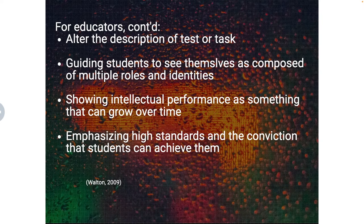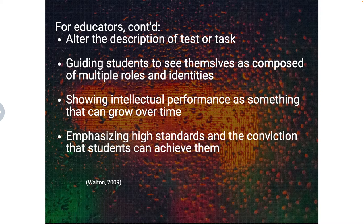Another thing you can do is alter the description of a test or task — for example, if you are giving a test to a group of elderly individuals, you might start by saying that it's not a test of cognitive ability or memory. Guiding students to see themselves as composed of multiple roles and identities can also help, as can showing intellectual performance as something that can grow over time. Finally, emphasizing that you have high standards and you believe that students can achieve them has been shown to greatly reduce the effects of stereotype threat. While in some areas the results have been questioned, when it comes to education, the research has been fairly unequivocal — this is a real issue, and one we can all work on together to help every student succeed.